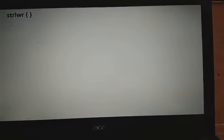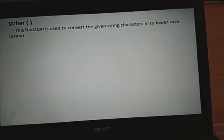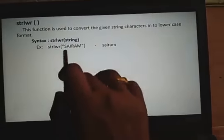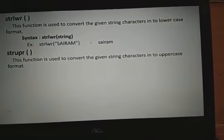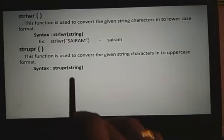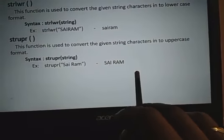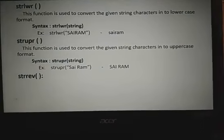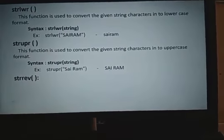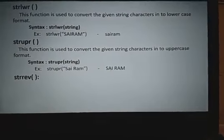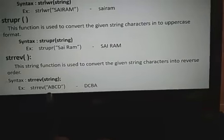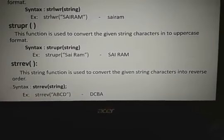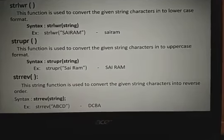Strlwr converts a given string to lowercase format. Strupr converts the string from lowercase to uppercase. Strrev reverses the string automatically. For example, if the input is ABCDMGV, strrev will produce the reversed output VGMDCBA. These are the several string manipulation functions available in C.